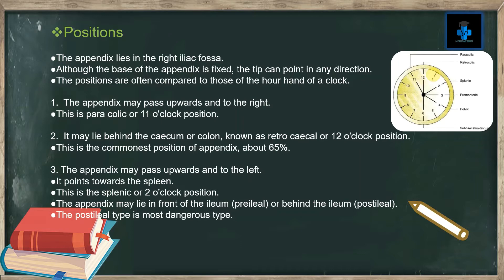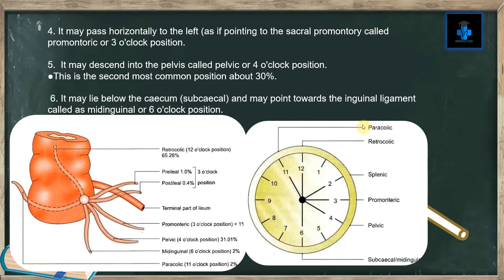The appendix may pass upward to the left, pointing towards the spleen — this is the splenic or 2 o'clock position. The appendix may lie in front of the ileum (pre-ilial) or behind the ileum (post-ilial). The posterior type is the most dangerous type.